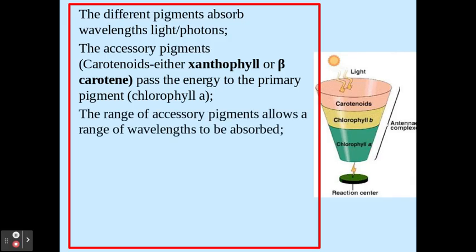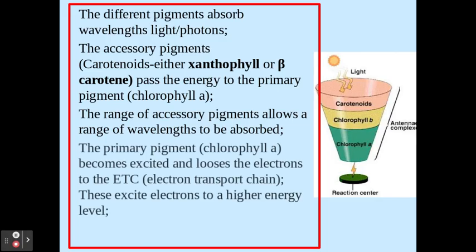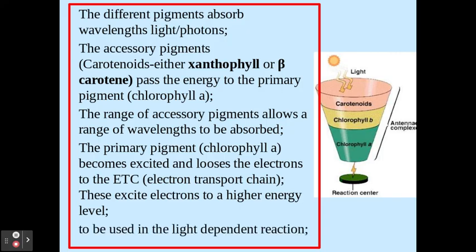The range of accessory pigments that the photosystem has allows a range of wavelengths to be absorbed. The primary pigment, chlorophyll A, becomes excited by the energy that has been passed to it. This energy that chlorophyll A has, it passes on to electrons, and it loses those electrons to the electron transport chain. Those electrons become excited to a higher energy level, and we'll learn about how they're used when we look at the light-dependent reaction in more detail in the next couple of videos.